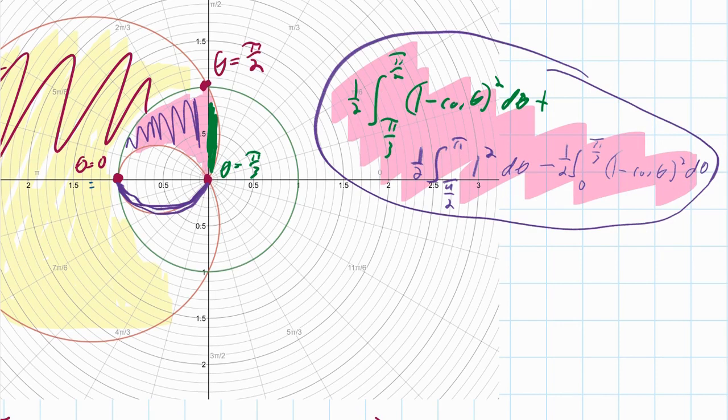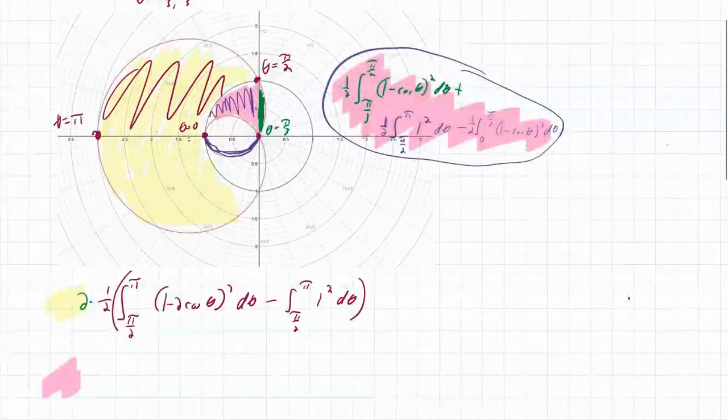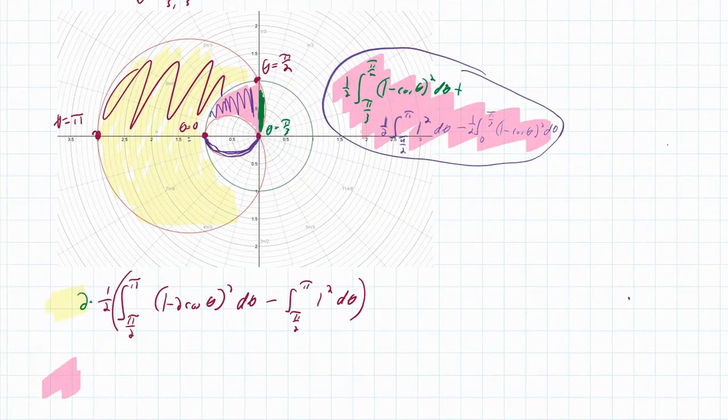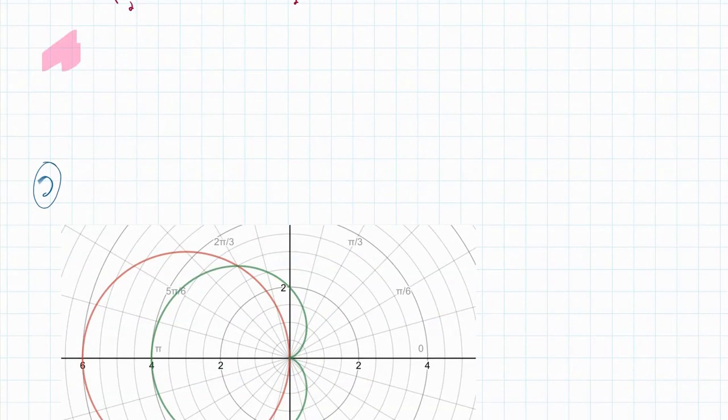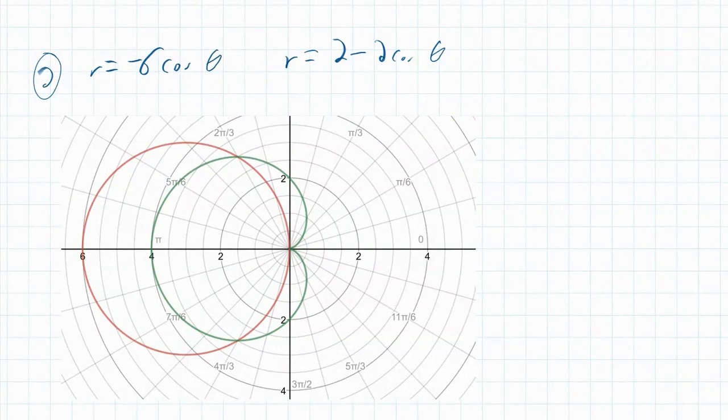So it's a little bit tricky. You have to play around with visualizations, and you have to try to see where these are occurring. So let's do one more example. Let's call this number two. Radius equals negative six cosine of theta, and then r equals two minus two cosine of theta. So first things first is having a sense of which curve is which. This one right here is the red curve, because it's a circle moving to the left.